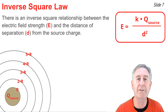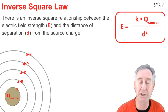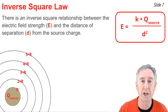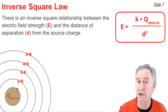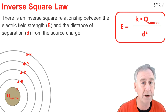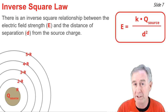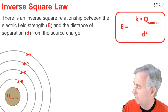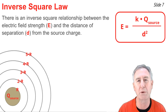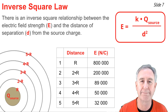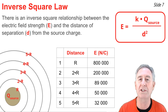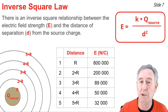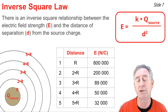As this equation suggests, there is an inverse square relationship between the electric field strength and the separation distance from a location to the center of the source charge. Consider a source charge with radius r, and four additional locations that are two, three, four, and five times as far from the center of the source as the surface of the source is. If the electric field strength on the surface is 800,000 N/C, we can calculate the electric field at each of those locations using the inverse square relationship.